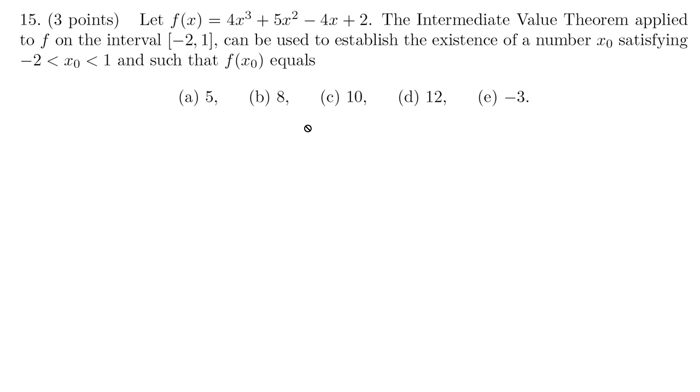Let's go to number 15. So an intermediate value theorem question. We have a polynomial. We want to look at this polynomial between negative 2 and 1. So I have no idea what the graph of this looks like. But let's just draw a little bit of this graph. If I put negative 2 in here, what is the y value going to be for that? I'm just going to use my calculator for that. It's going to be 4 times negative 8 plus 5 times 4 minus 4 times negative 2 plus 2, which is negative 2. And if I put the other x value, 1 in there, what do I get? I get 4 plus 5 minus 4 plus 2, which is 7.